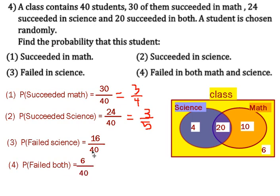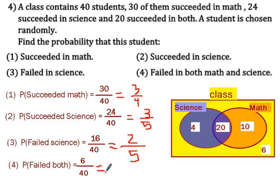Please simplify these two fractions. The first one divided by 8 will be 2 over 5, and the second will be 3 over 20. Thank you.